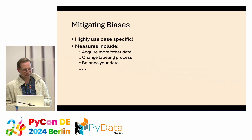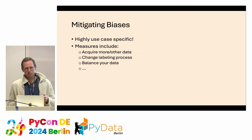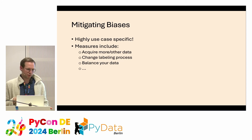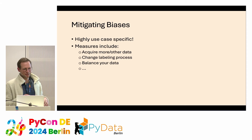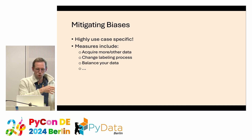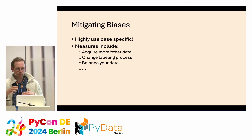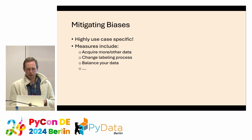You may ask how to mitigate these biases. Usually it is highly use case and problem specific. There will be technical measures like changing the balance of your data or switching out some labels. But also, if some group is underrepresented, you may need to acquire more data, or change your labeling process to rule out labeling issues.